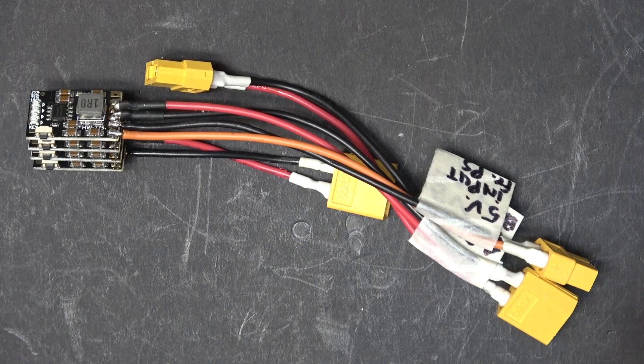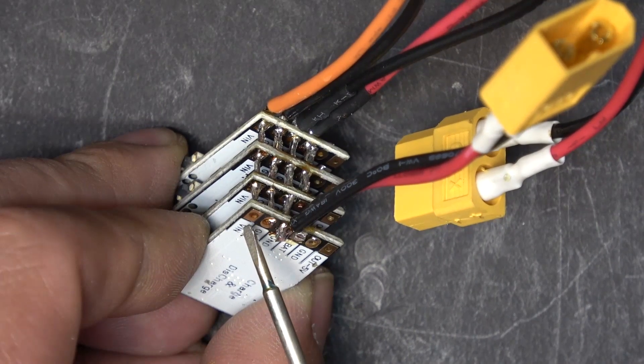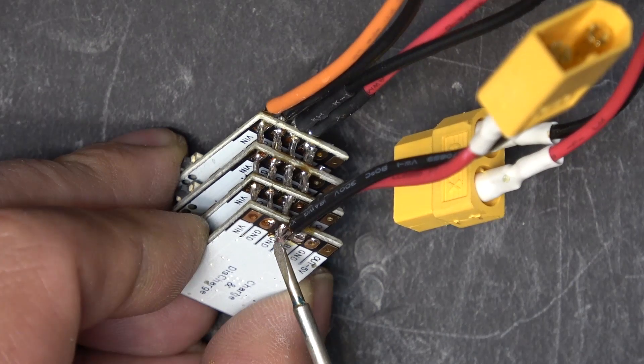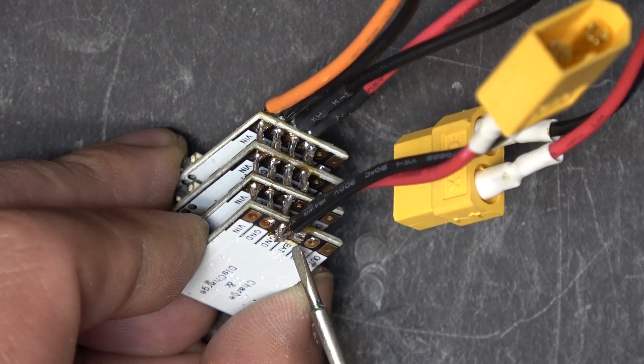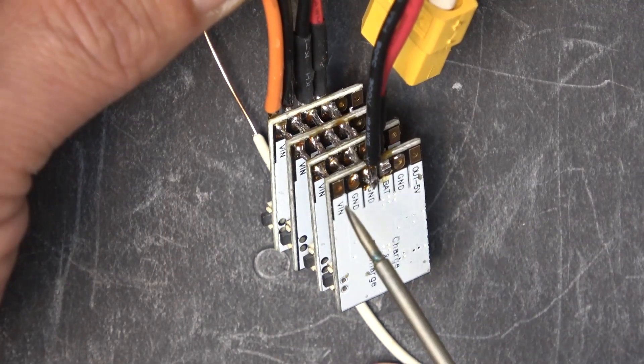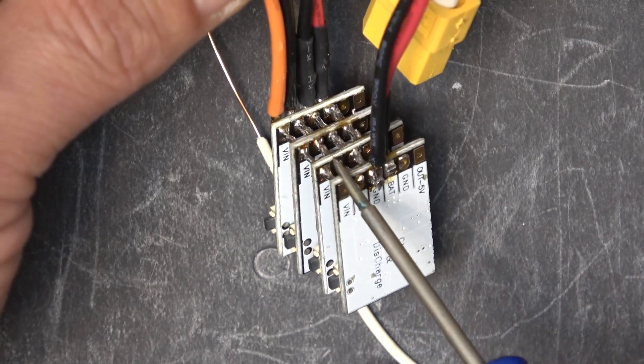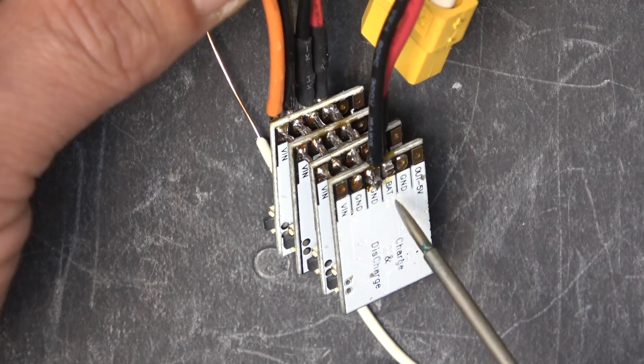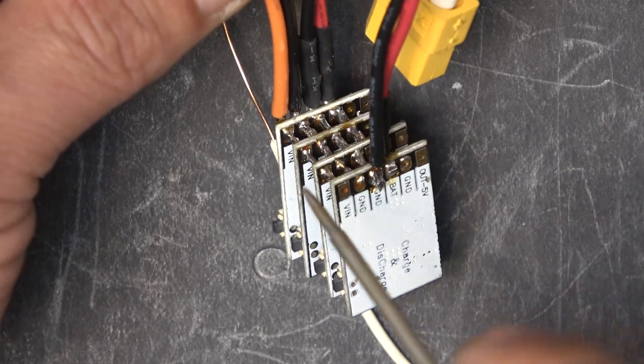Alright, so here we go. It is finally done. So on this board we got 5 volt input, ground, another ground, and that is 4.2 volt output to battery. All of the terminals are connected in parallel. So all of the VIN are connected together, all of the ground are connected together, and then finally the battery output, they are all connected together.